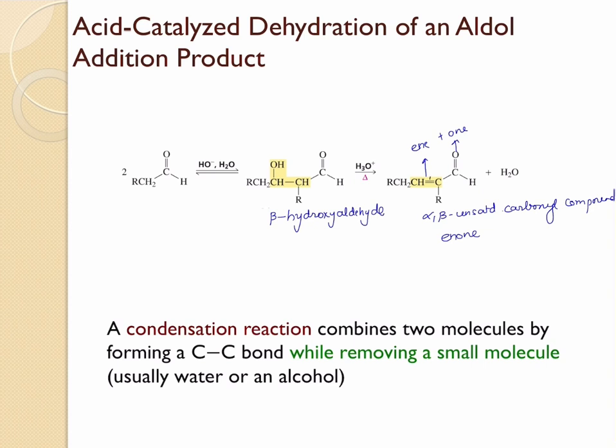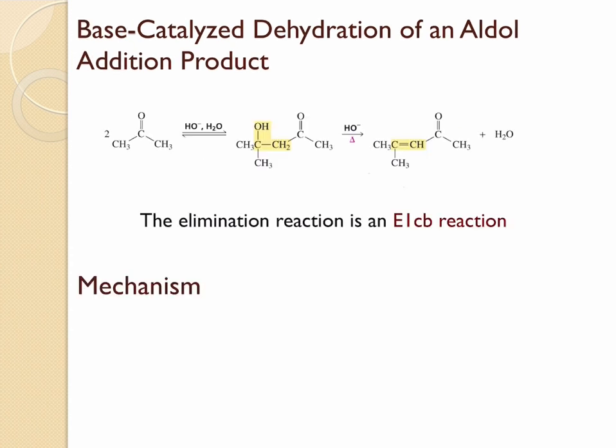We know that alcohols can get dehydrated when heated in the presence of an acid, but here the reaction is going to be even faster because the newly formed double bond is in conjugation with the carbonyl group, making this enone molecule more stable. Unlike alcohols which require acidic conditions to get dehydrated, the aldol condensation reaction can also be conducted under basic media to form the alpha-beta unsaturated carbonyl compound.